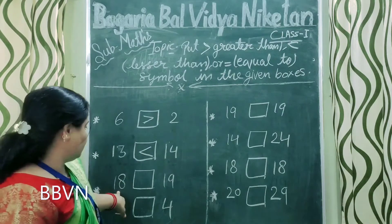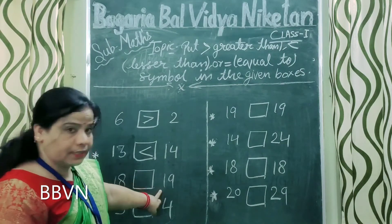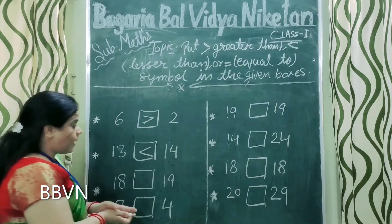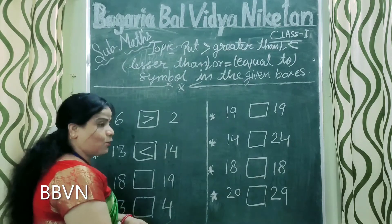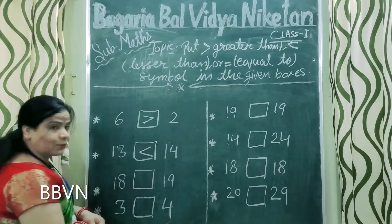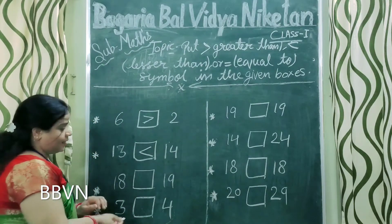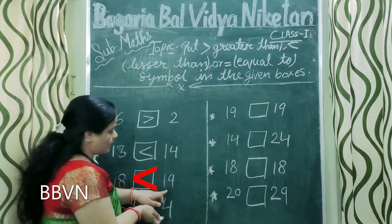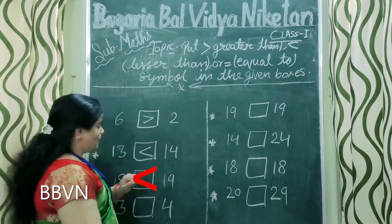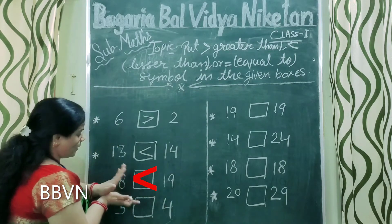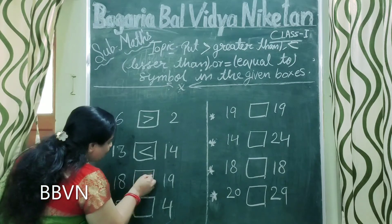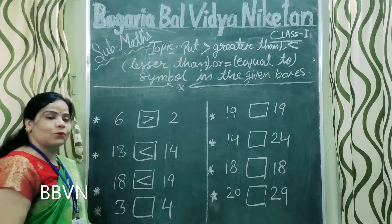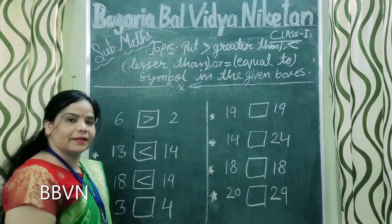Ab, 18 and 19. Bataayi, crocodile ji kisko khaenge? Kaunse number ko khaa lege? 19, because 19 is greater. To alligator ka face is taraf — ab uska mouth open kar do.